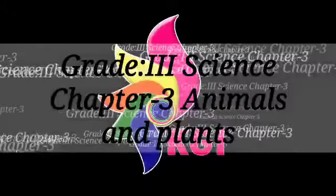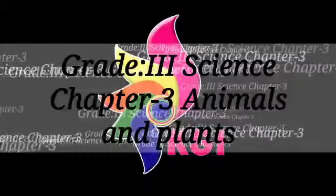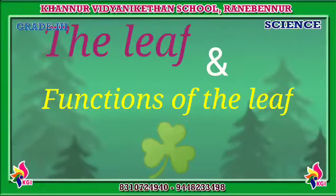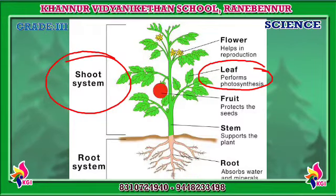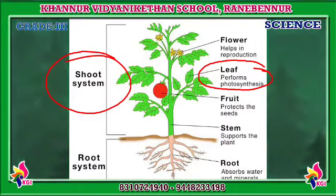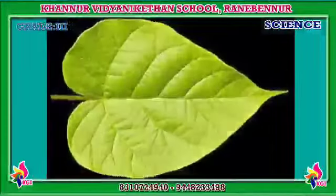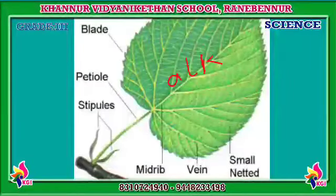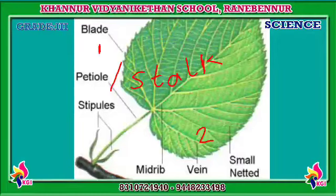Good morning, dear kids! In this session you are going to learn about the leaf and the functions of the leaf. The most important part of the shoot system is the leaf. Most living plants have green leaves. The flat and broad part of a leaf is called the leaf plate or the lamina.